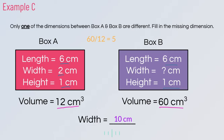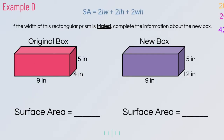In the final example, the width of the rectangular prism is tripled and we need to complete the new information — this time about surface area, not volume. Just like example A, the width goes from 4 to 12. We find the original surface area using the formula: 2 times length times width, plus 2 times length times height, plus 2 times width times height, which gives us 202 square inches.